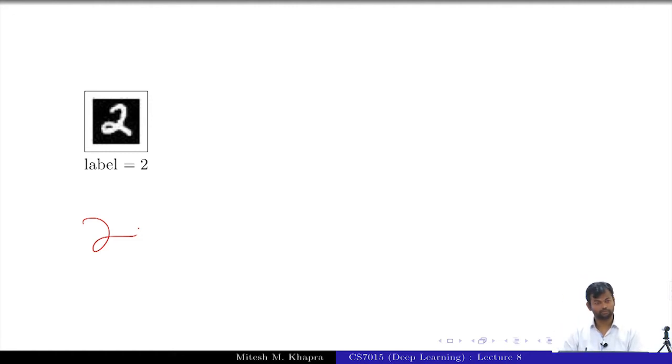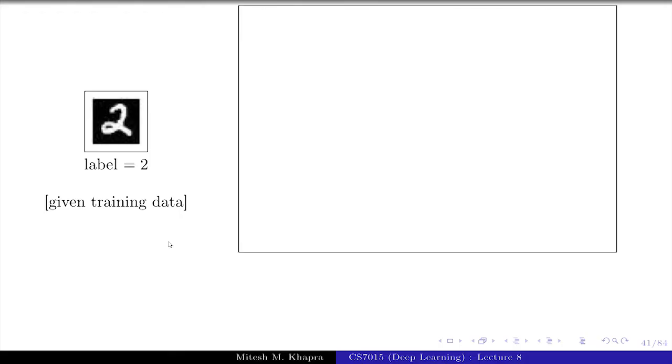I am telling you that it is possible that someone writes a 2 in a very tilted manner. Can you prepare for that eventuality? The title of this module was dataset augmentation. What would happen is that given some training data, you can always generate more training data from them. So here is another training instance that I have created.